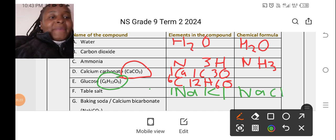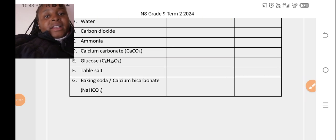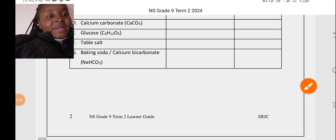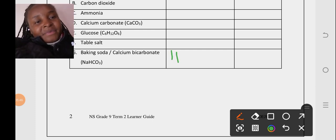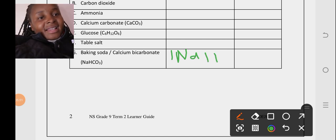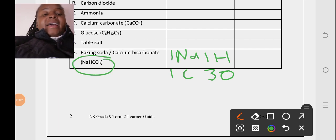What about baking soda, which is sometimes we call it calcium bicarbonate or sodium hydrogen carbonate? That's the baking soda. The elements that are in the compound: we have one sodium, one hydrogen, one carbon, and then three oxygens. The chemical formula they gave us is perfect.